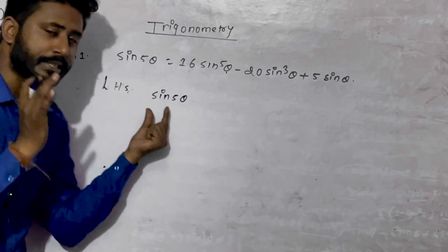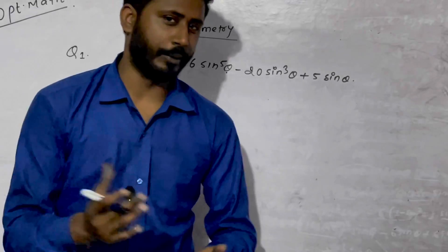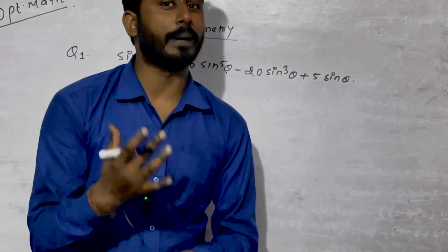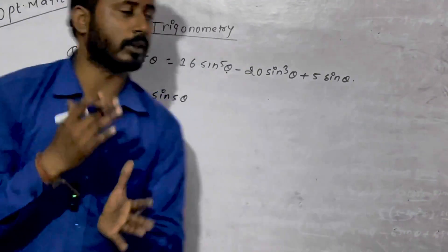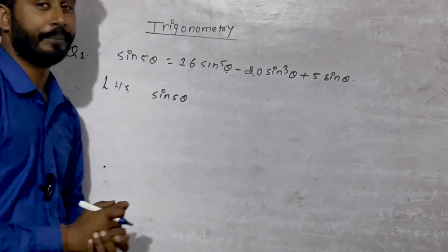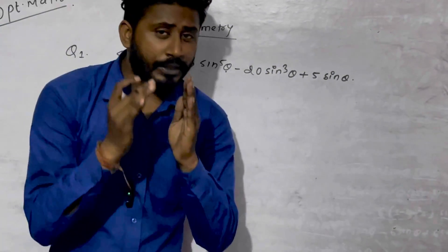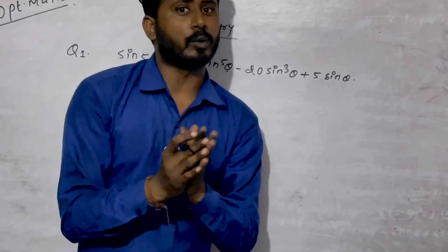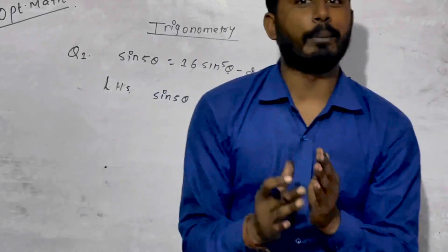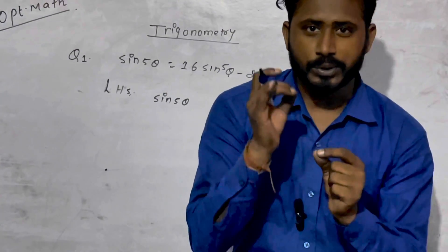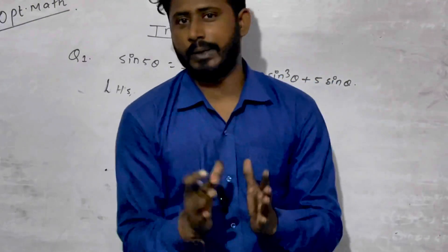We read the formula of sin(5θ) in the book. We have a multiple angle of trigonometry. We read the formula of sin(3θ) and sin(2θ).